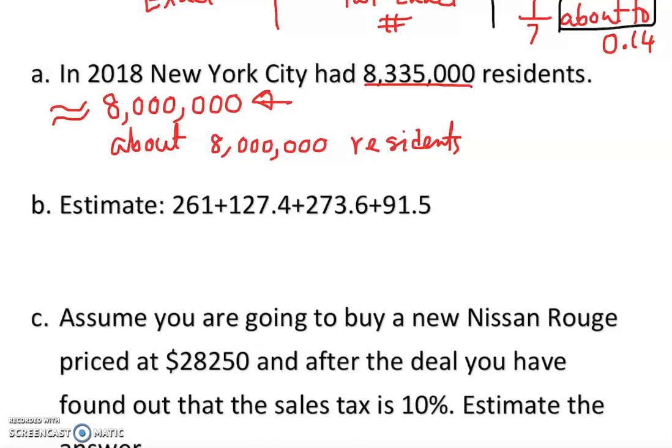Now next one - B: estimate. Well, it doesn't say estimate by rounding what, but is given like that, so answers may vary. This one, if I look into here, I am going to actually estimate by nearest tens, so I'm going to put down here 260 plus 130 plus 270 plus 90. And I hope you know why it is 130.